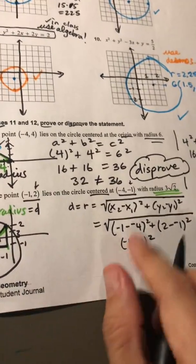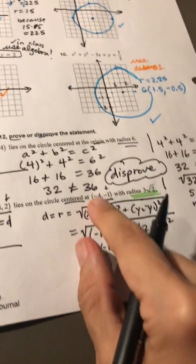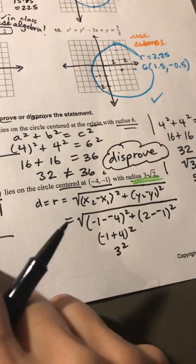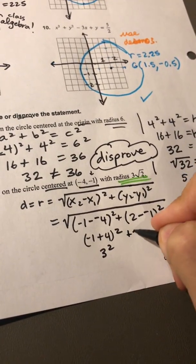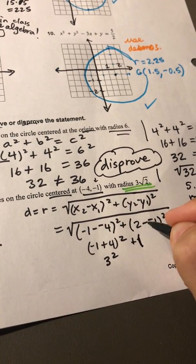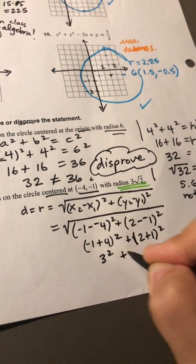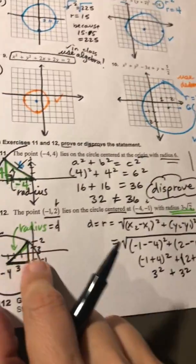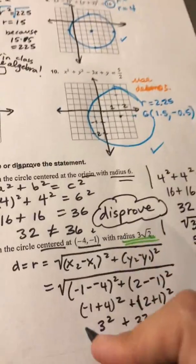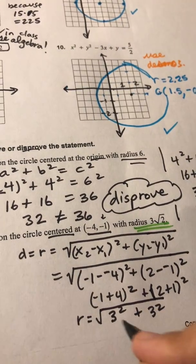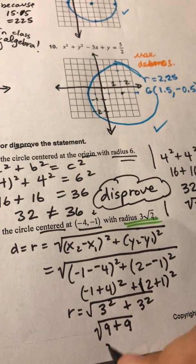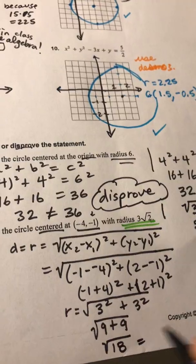And again, if we think about it, the number negative 1 and negative 4 really are 3 away from each other. And now here, 2 minus a negative 1 would be 2 plus 1, and that's 3 as well. So our picture was correct, and we've just confirmed that. So the radius of this circle would be 9 plus 9 and take the square root, or the square root of 18.